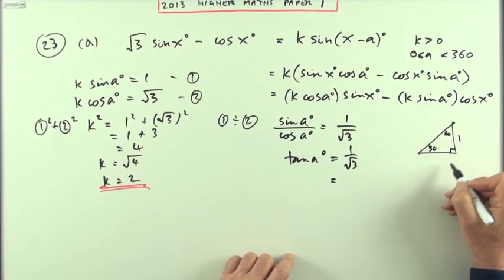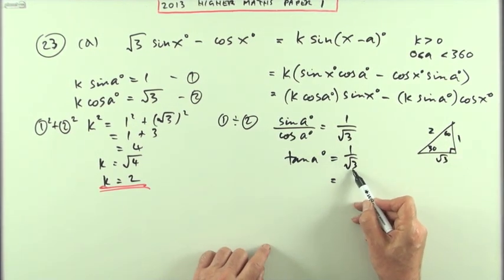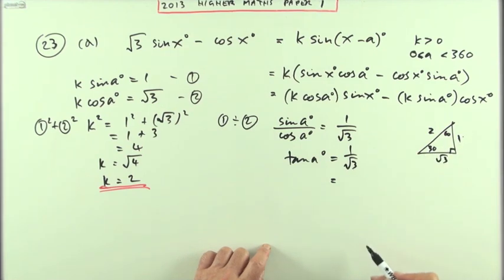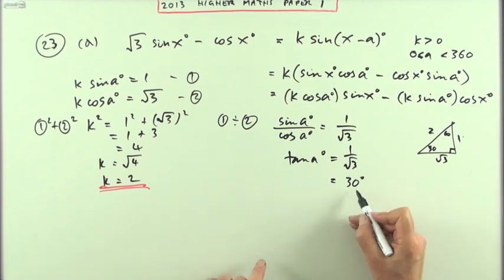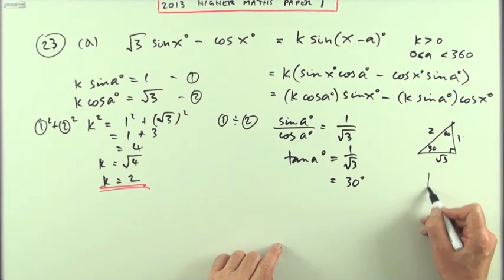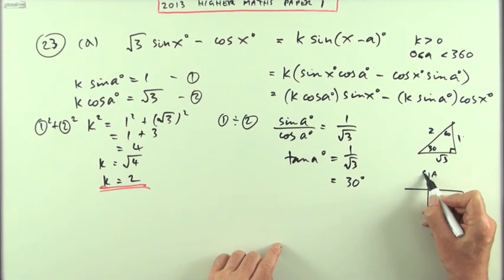If you don't remember it, you can always draw the triangle, the 30-60 triangle. 30 is the smallest angle, that must be the one. That's the biggest, 2, so that's root 3. Tangent is the opposite over the adjacent. Opposite is opposite 30, and one's opposite 30, so that would be 30 degrees.